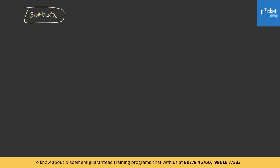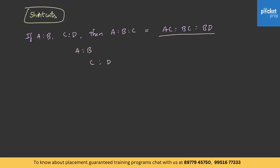Now we shall understand a couple of shortcuts. If A is to B and C is to D are given, then the simplest way to find A is to B is to C is: A·C is to B·C is to B·D. To remember this trick: given A is to B and C is to D, multiply A to C, then B to C, then B to D, giving A·C is to B·C is to B·D.